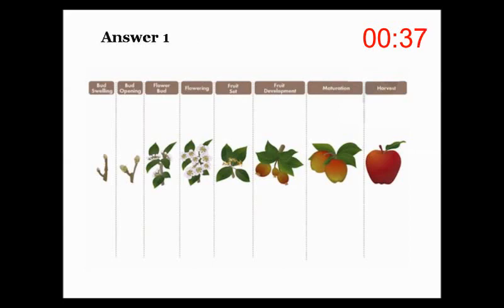This graph gives information about the flowchart of the apple. To begin with, we can see that there are several sections in this picture including bud swelling, bud opening, flower bud, flowering, fruit set, fruit development, maturation and harvest.